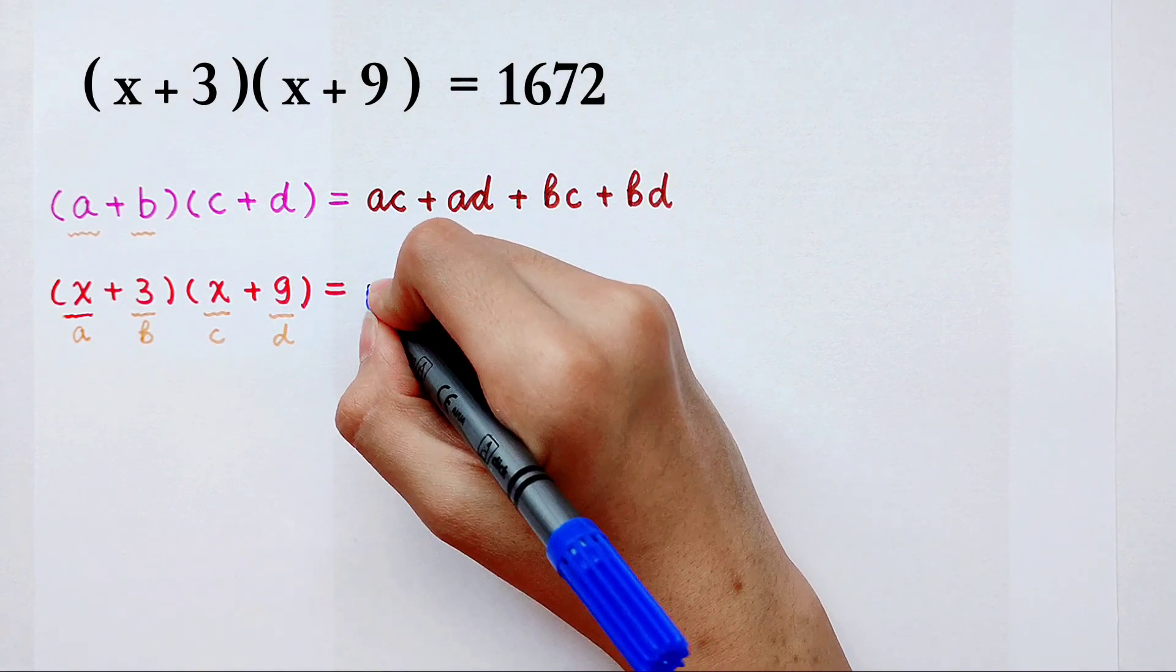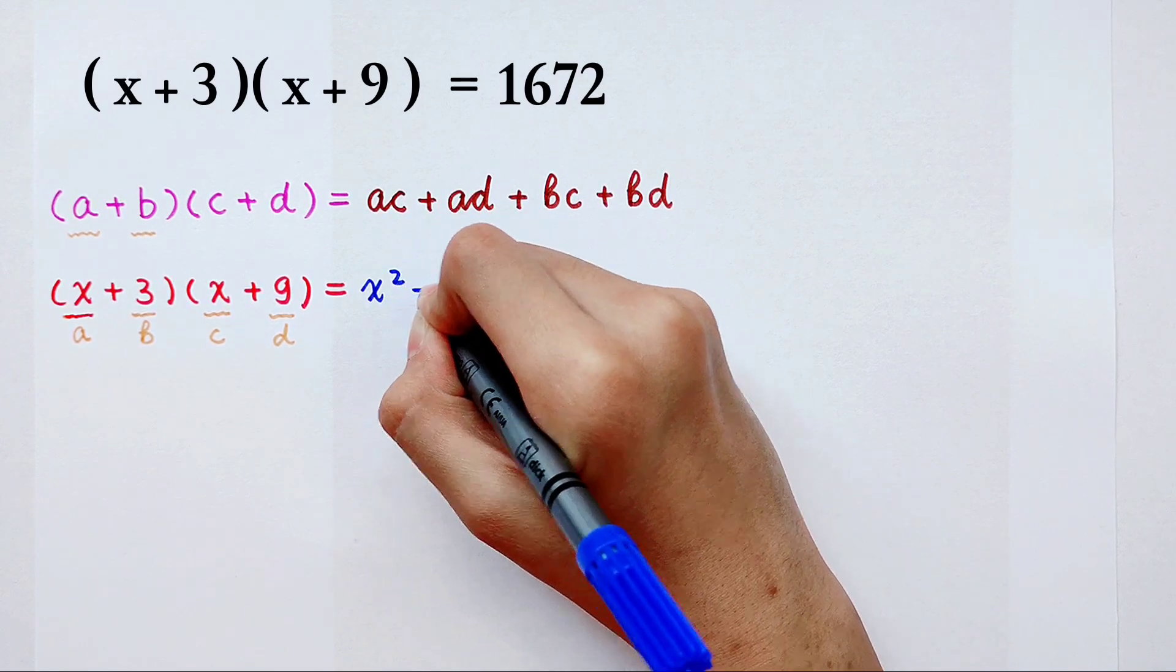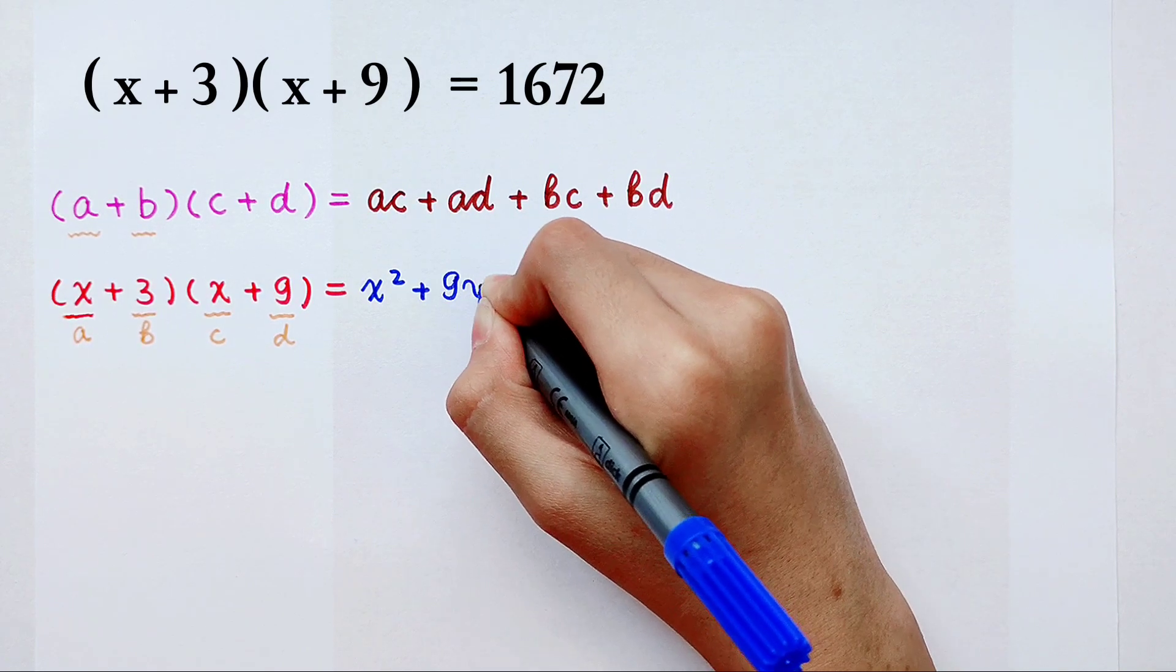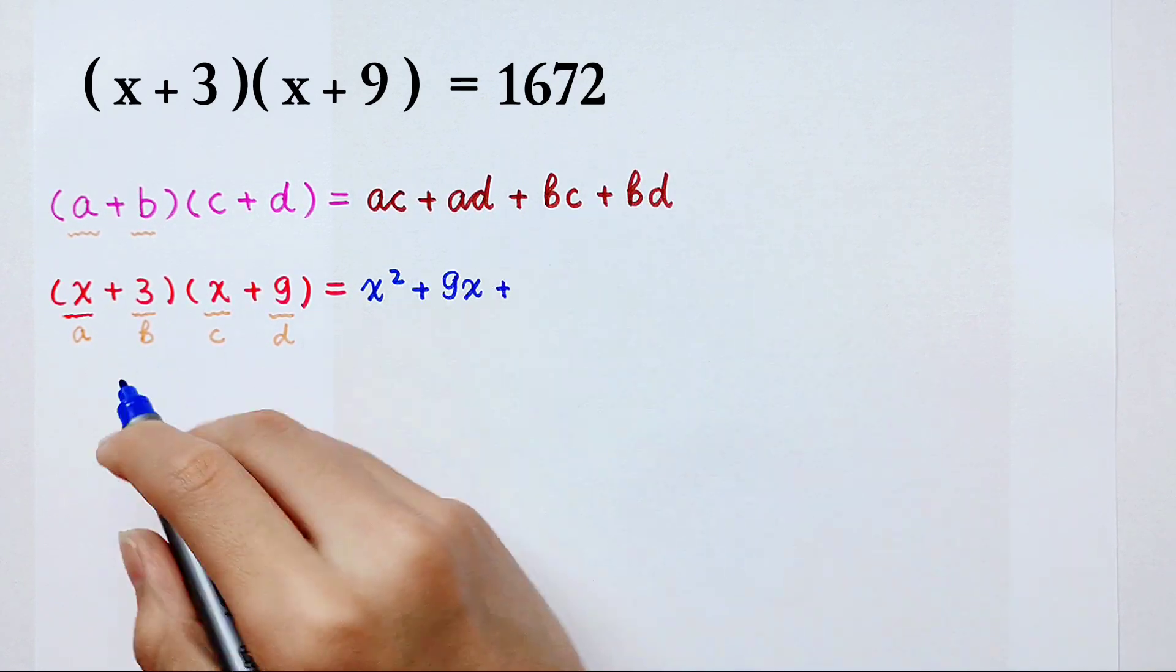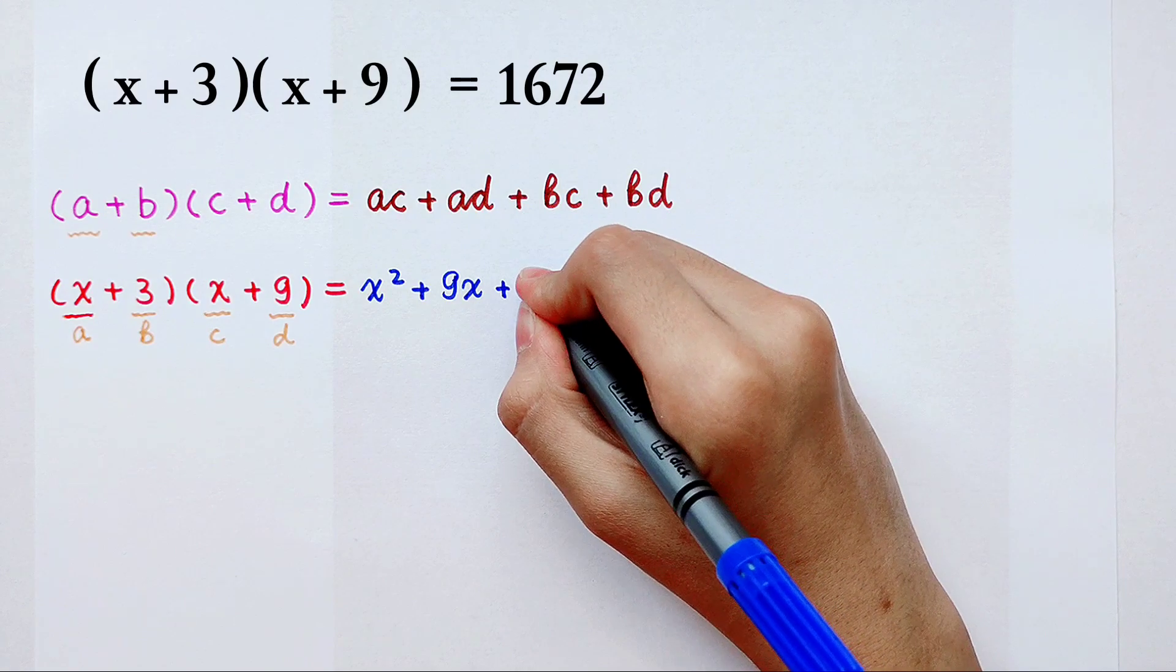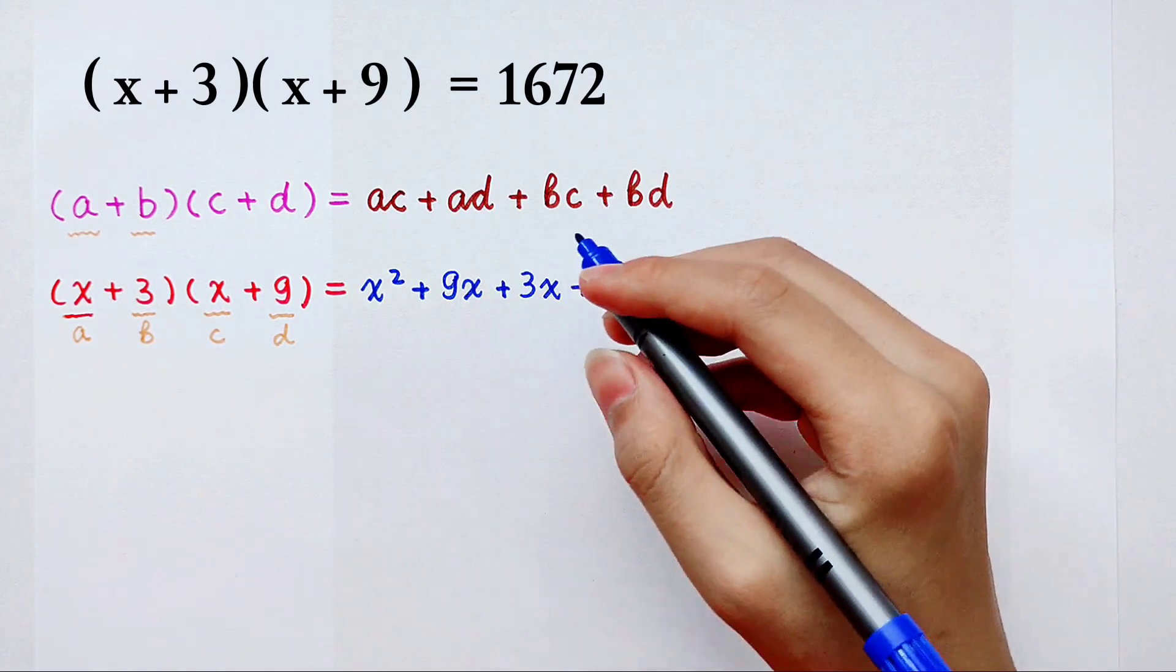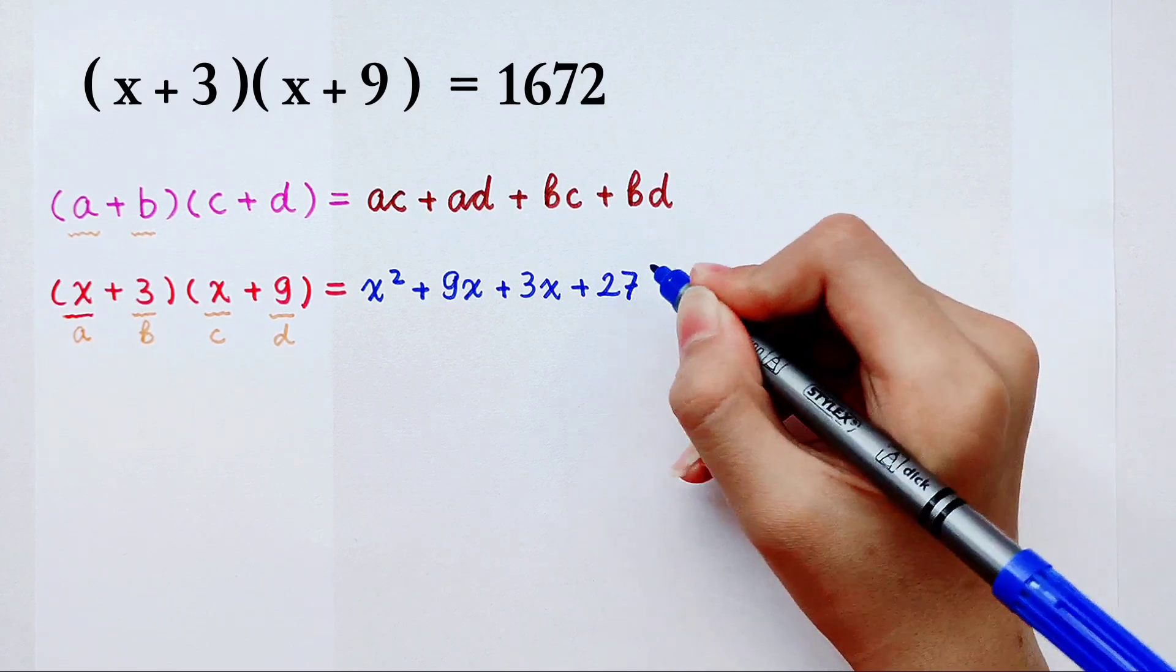a times c is x times x: x squared, then plus a times d is x times 9: 9x. Then plus b times c, 3x. And then plus b times d, 3 times 9 is 27.